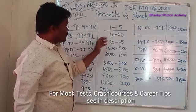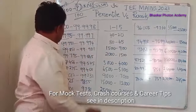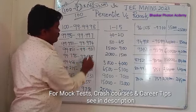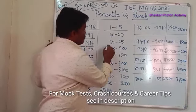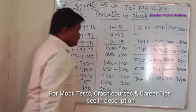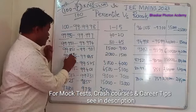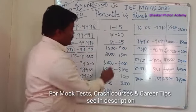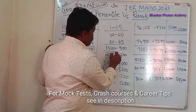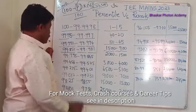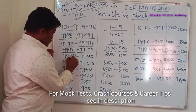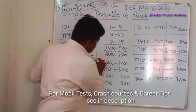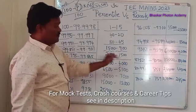For percentile 99.990 to 99.994, ranks are in the range of approximately 45 to 80. For percentile 99.851 to 99.901, ranks are around 900 to 1500. For percentile 99.795 to 99.845, ranks are in the range of approximately 1500 to 2000.